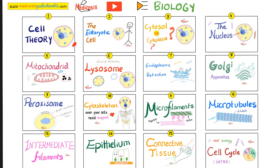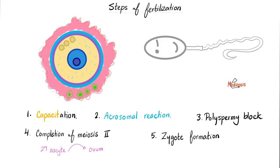Please watch these videos in order. What is fertilization? Fertilization is when the female gamete and the male gamete hug each other, and the steps of fertilization are as follows: capacitation, acrosomal reaction, polyspermy block, completion of meiosis II, and then zygote formation.